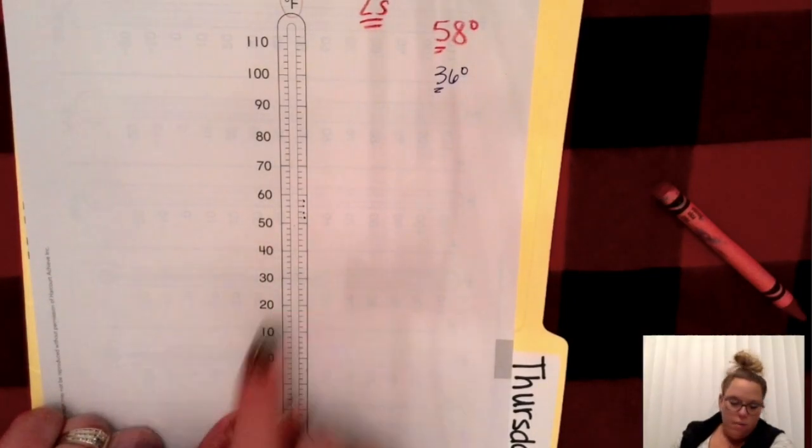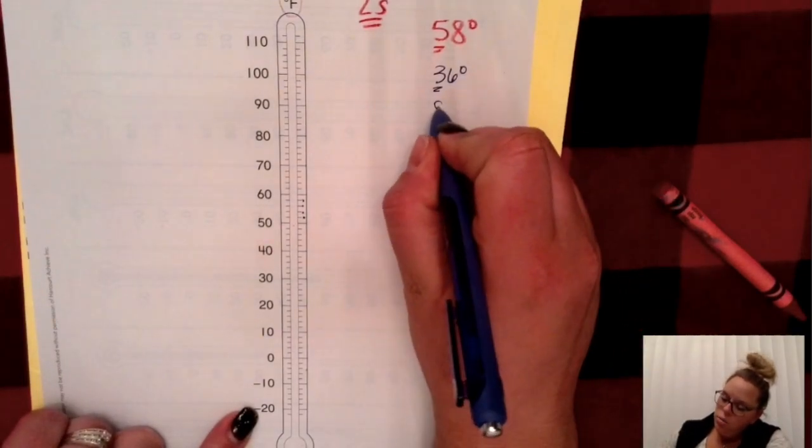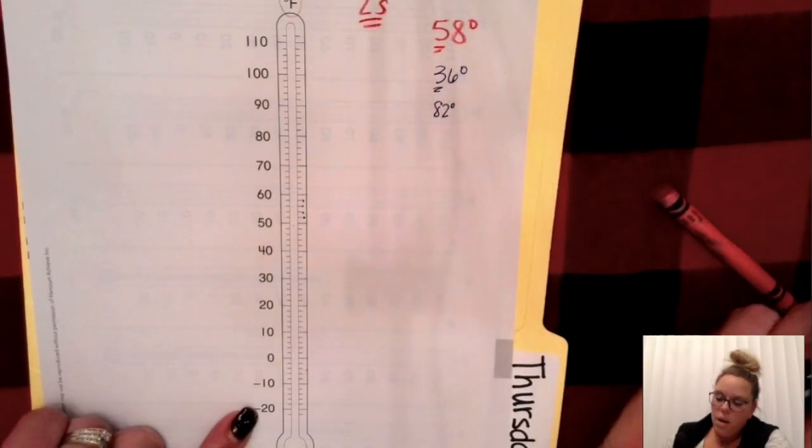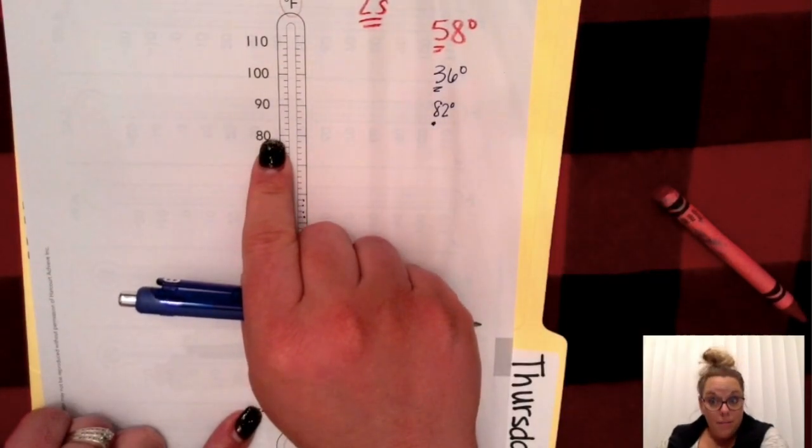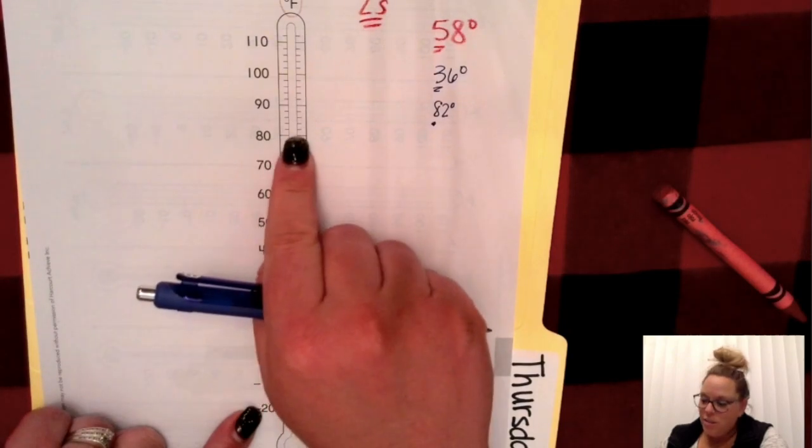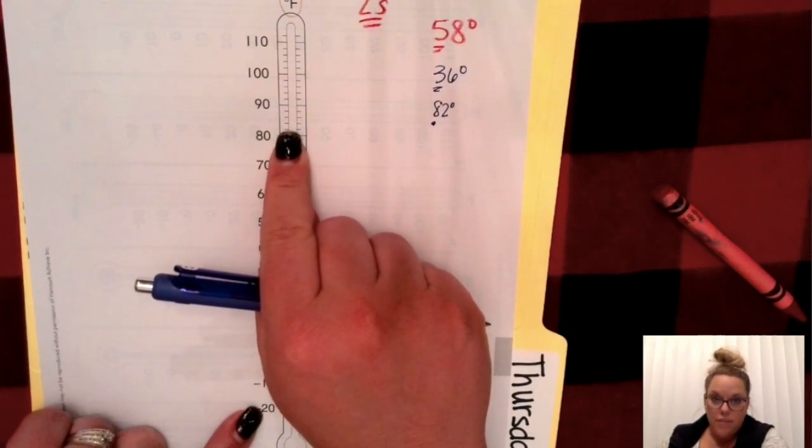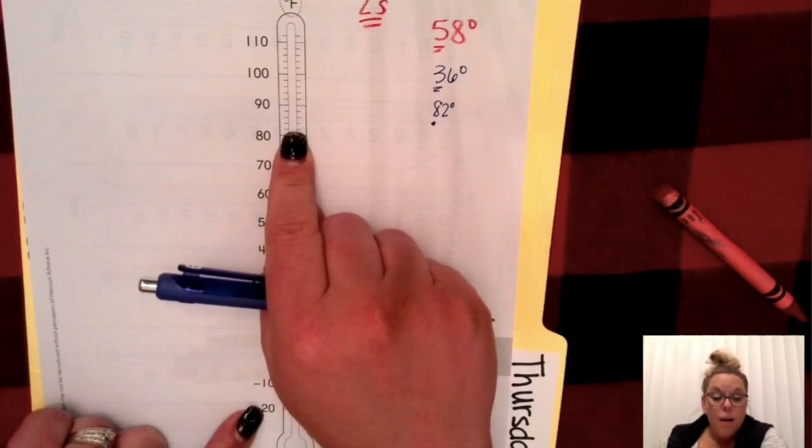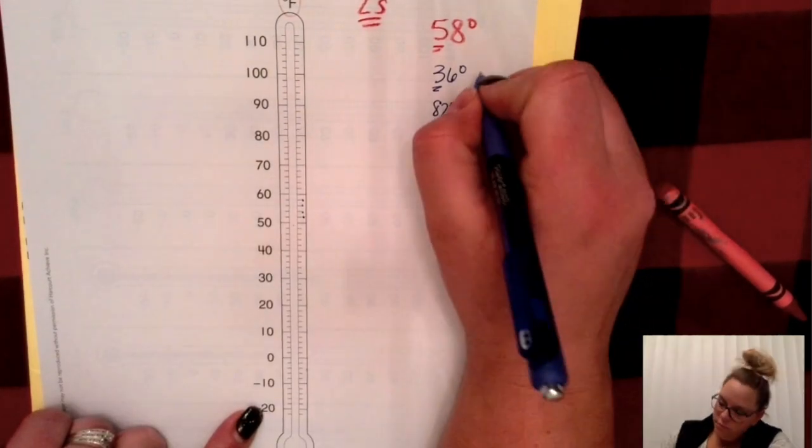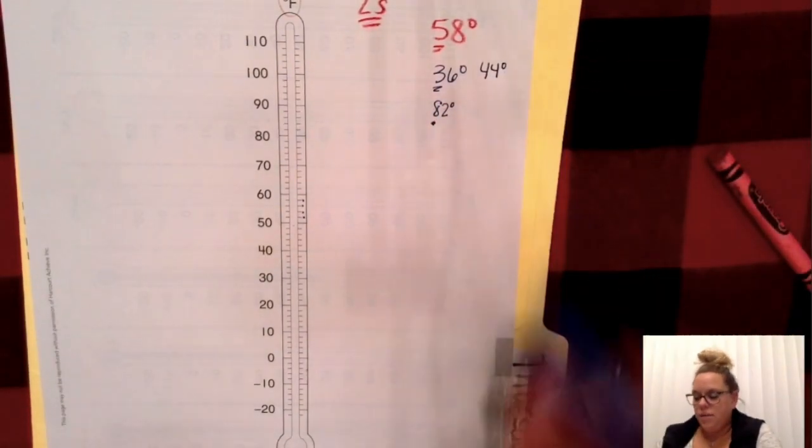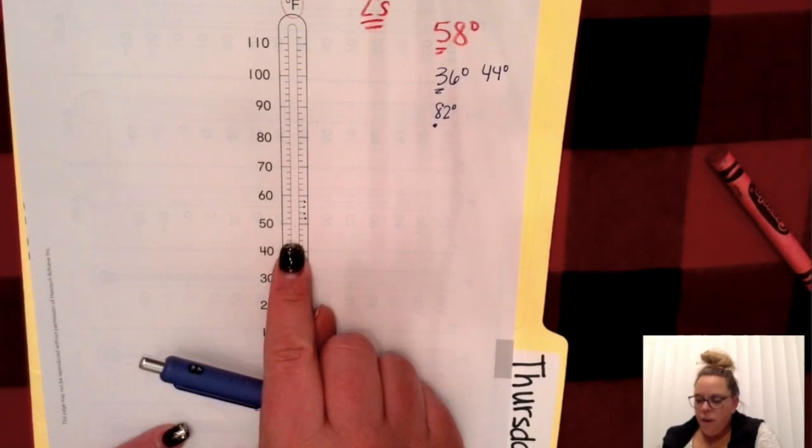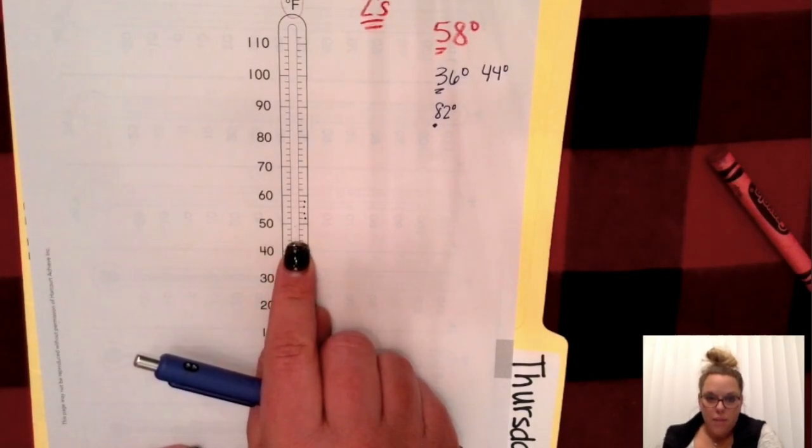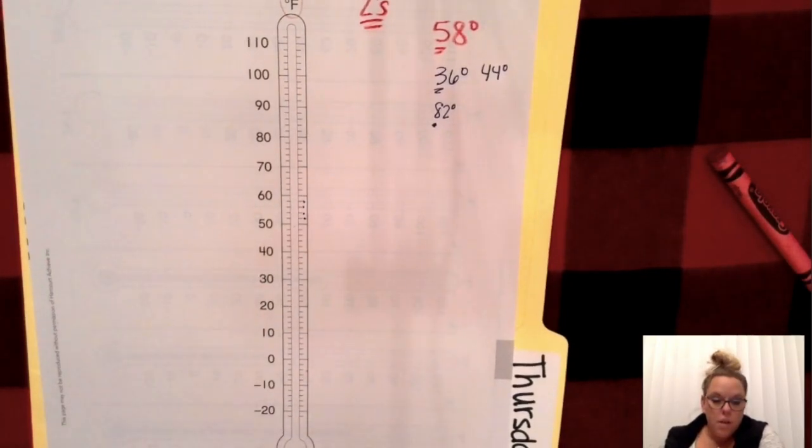What about 82 degrees? Well, I heard 80, so I'm going to start at 80. And now I'm going to count by twos: 82. That's that first line. How about 44? 44 degrees. I'm going to start at 40 and count up by twos until I get to 44: 42, 44. So that second dash up, my line will go across and I'll color them down.